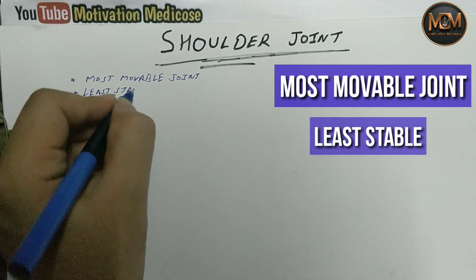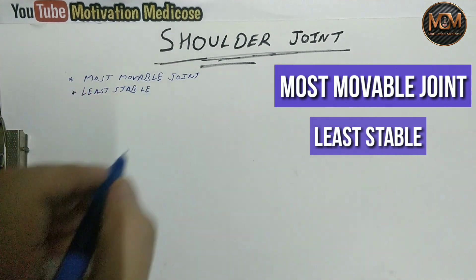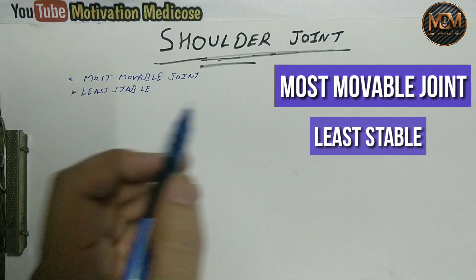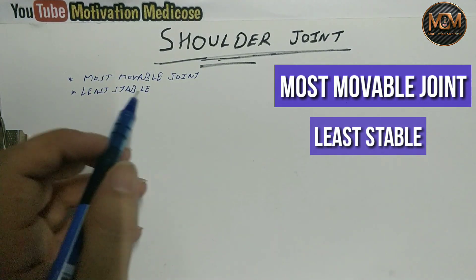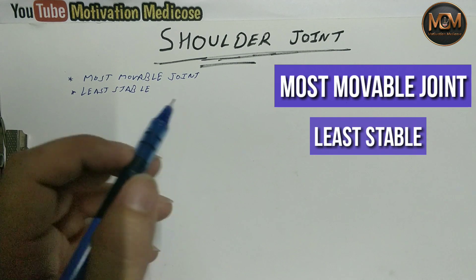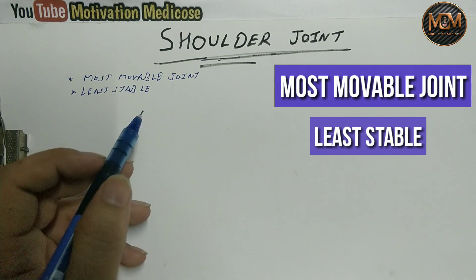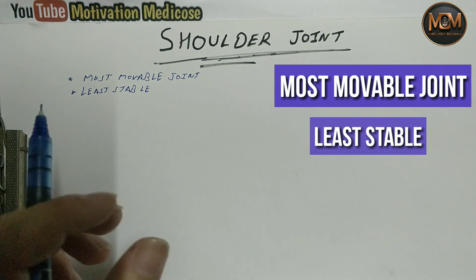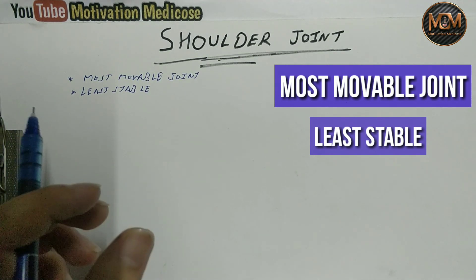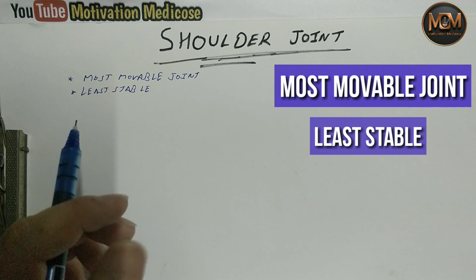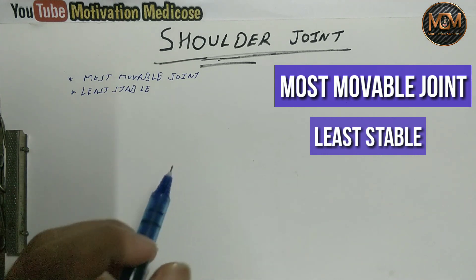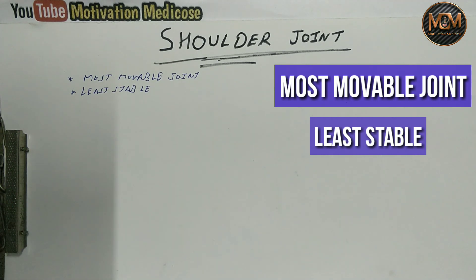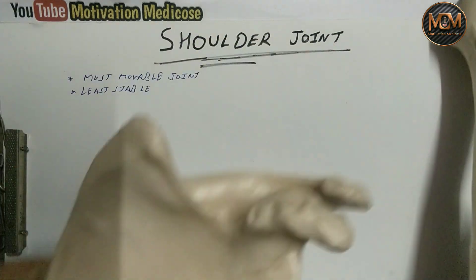But one important thing to understand is that this joint is the least stable. Any defect at any point in this joint leads to dislocation. That's why it is clinically very important and we need to study it thoroughly.